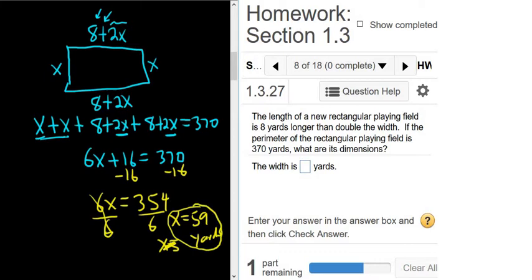So again, we're told it's 8 yards longer than double the width. So you do 8 plus 2 times the width. And then you add up everything, and you get 370. You solve for x, and that's your width.